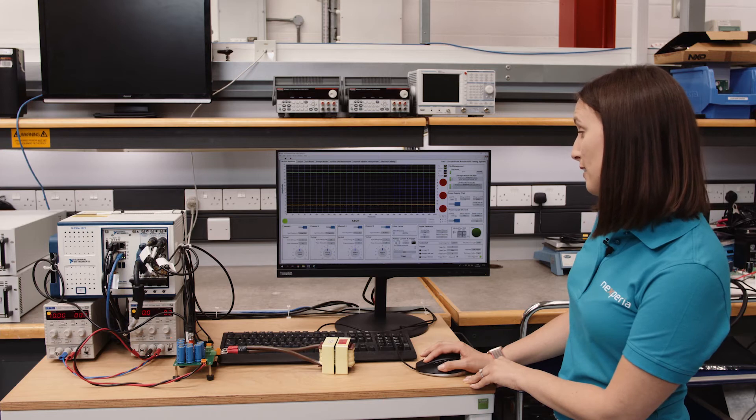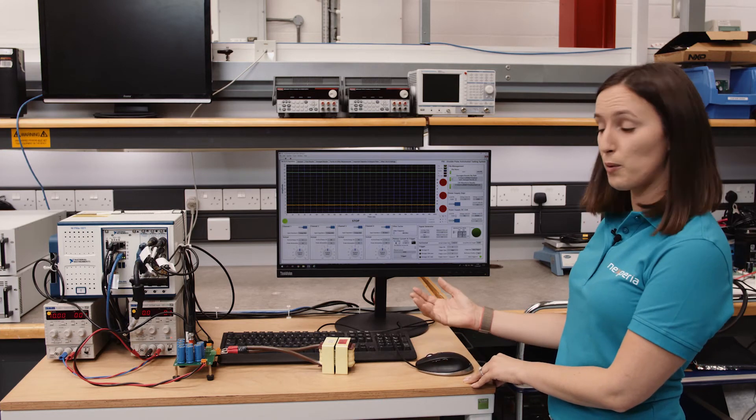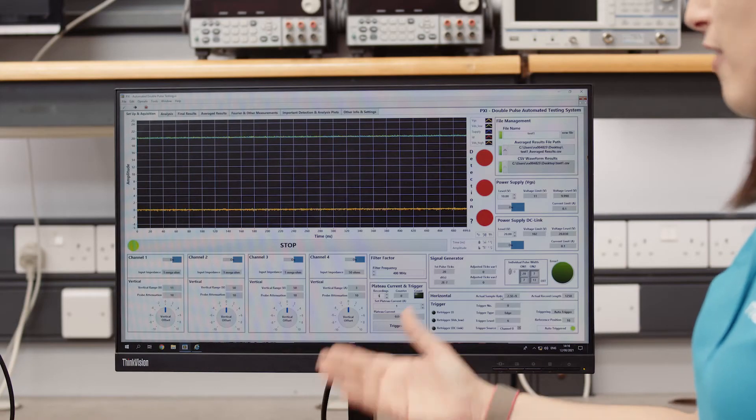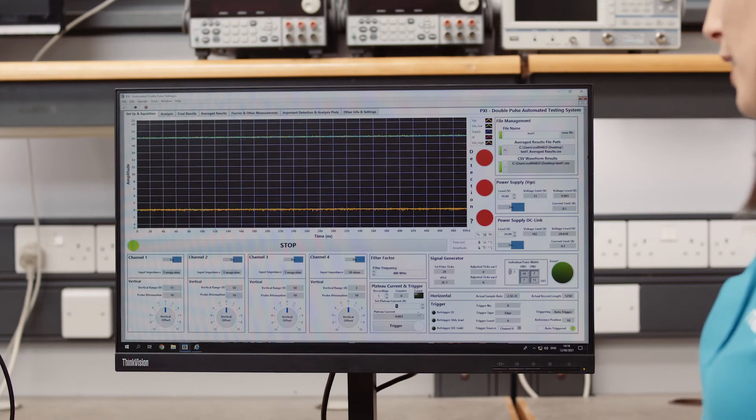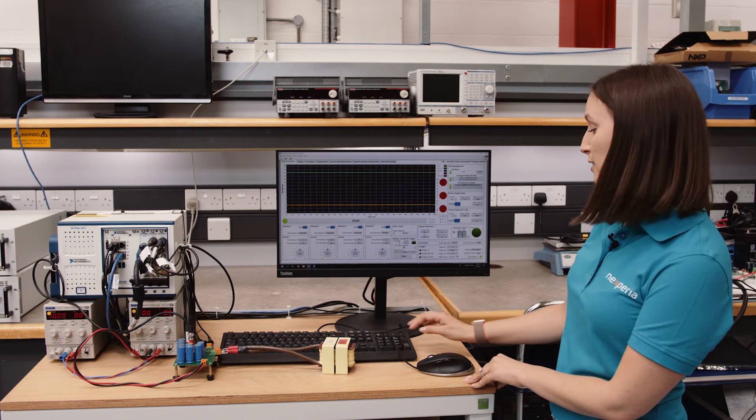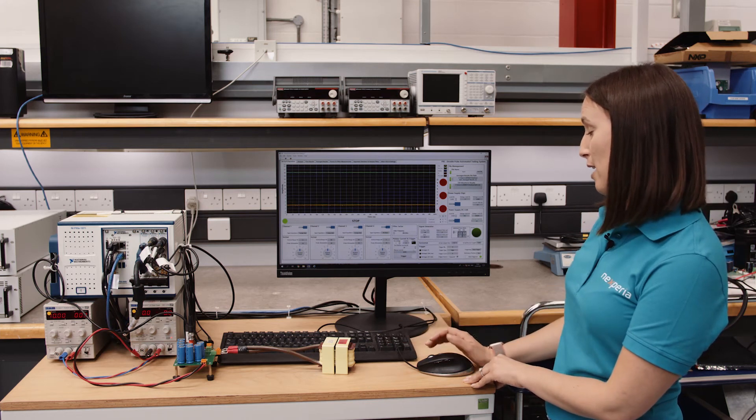Here we will set the number of recordings we want to take, which is 5 for example. And here we will set the current we want to switch at. In this case it's 25 amps.